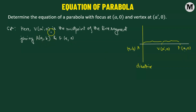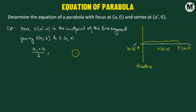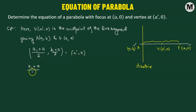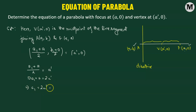So here we have vertex V as the midpoint of the line segment joining A and F. We can use the midpoint formula: take the sum of the x-coordinates of A and F — so a1 plus a, divided by 2 — as the x-coordinate, and the sum of the y-coordinates — b1 plus 0, divided by 2 — as the y-coordinate. This is equivalent to the coordinates of the vertex, which is a prime, 0. Equating the x-coordinates: a1 plus a divided by 2 equals a prime, so a1 plus a equals 2a prime, meaning a1 equals 2a prime minus a.